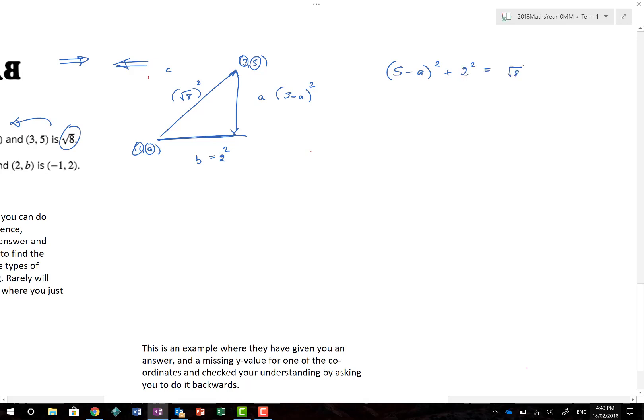Now, the first thing I know is that the square root and the square cancel each other out. So, the good news is, if I do the square root of 8 and then square it, I'm going to end back to 8. 2 squared is 4, plus 5 minus A squared. I'm going to take away 4 from both sides, which gives me 5 minus A squared is equal to 8 minus 4. So, 5 minus A squared gives me 4.